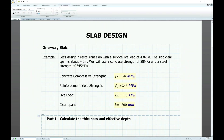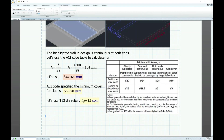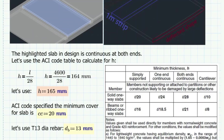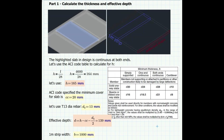The first part is to calculate the thickness of the slab and the effective depth. The highlighted slab in design is continuous at both ends. ACI code specifies minimum values of h for a one-way slab unless deflections are calculated. Based on the ACI table for one-way slab with both ends continuous, we use the L/28 formula and get a thickness of about 164 mm — let's use 165 mm. With a 20 mm concrete cover (the ACI minimum for slabs) and T13 diameter main reinforcement bars, the effective depth d = 165 − 20 − 13/2 = 139 mm. Since we are designing for a one-meter slab strip, we use b = 1 m.